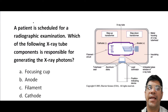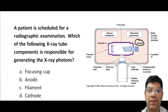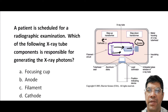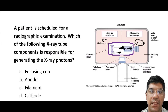A patient is scheduled for radiographic examination. Which x-ray component is responsible for generating x-ray photons? The answer is the anode. In an x-ray tube, the anode is responsible for generating x-ray photons. When high-energy electrons from the cathode strike the anode, they interact with the target material in the anode, producing x-ray photons.